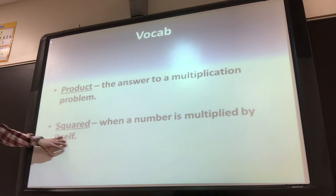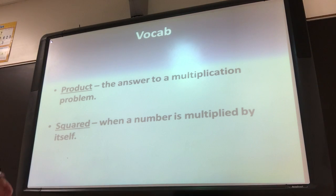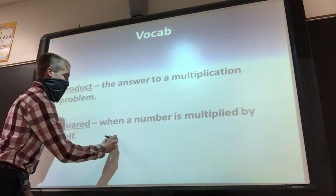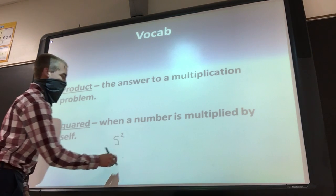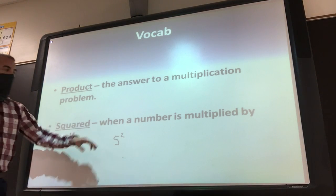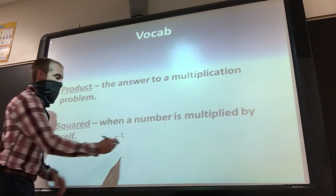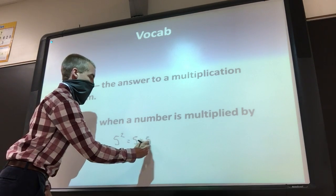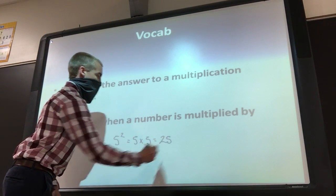So if a number is squared, let's say it's 5 squared — that means we multiply that number by itself. So 5 squared, the way that they write it is like this: 5 with a 2 as an exponent. That's what that's called. So 5 squared would be 5 times 5, which is 25.